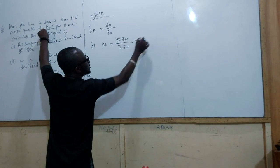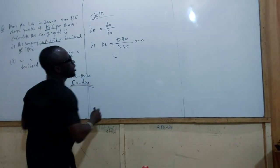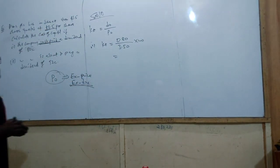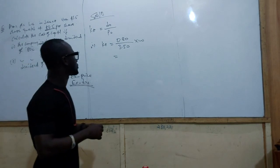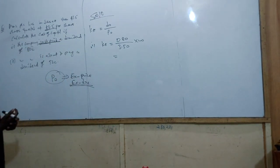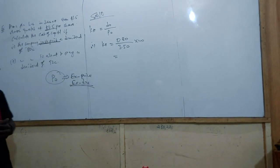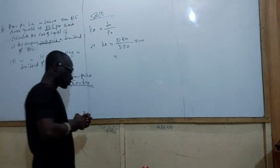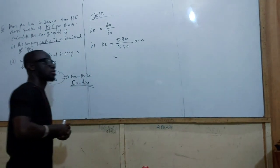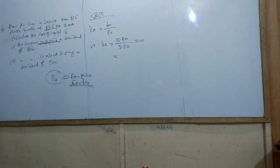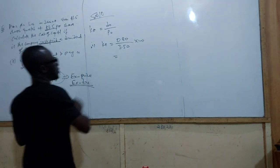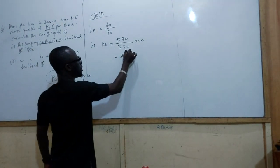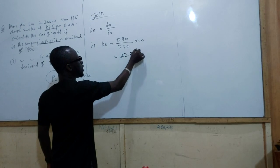Remember, all these are times 100 because KE is expressed as a percentage. That gives us 22.85%.